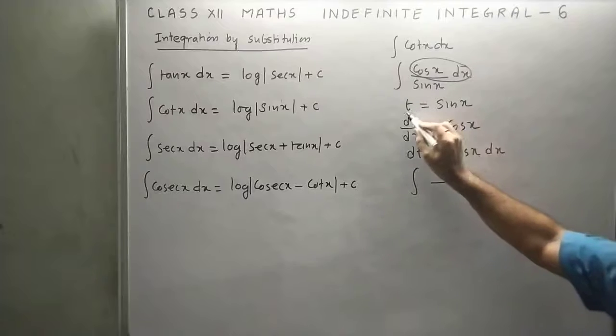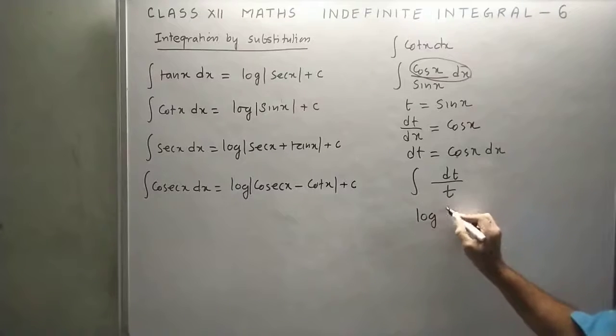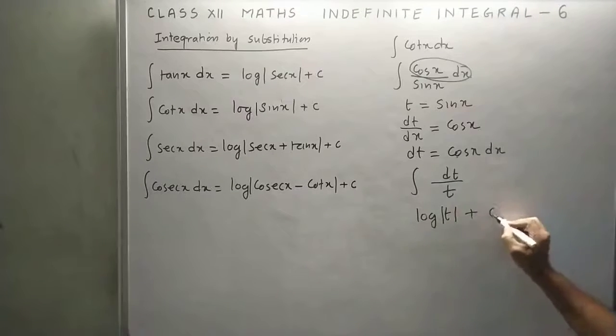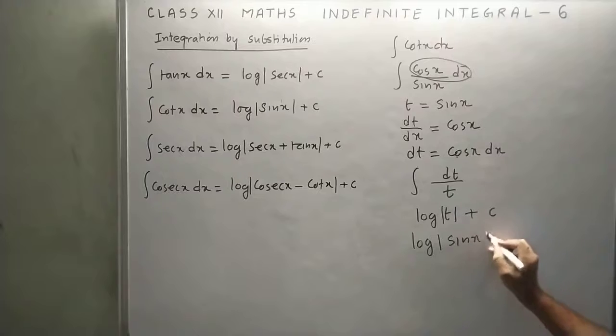Cos x dx means dt, and sin x equals t. Now we have a very simple integration: dt upon t, which equals log t plus c. Now replace t by sin x. So this is the formula of cot x: log sin x plus c.